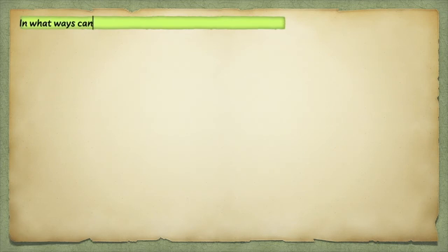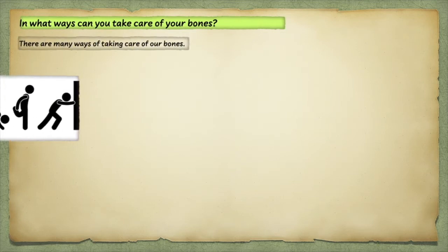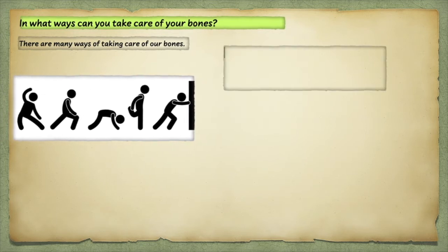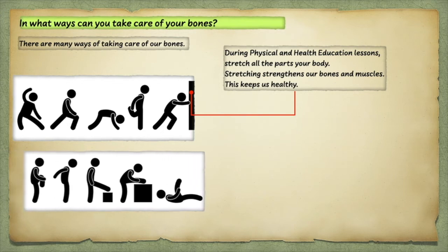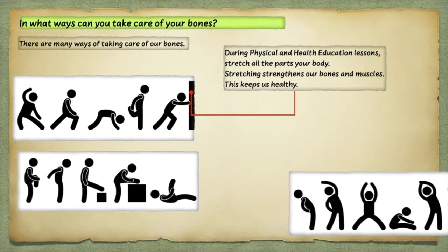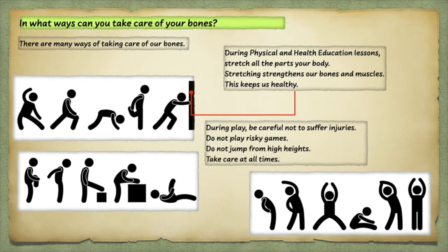In what ways can you take care of your bones? There are many ways of taking care of our bones. During physical and health education lessons, stretch all the parts of your body. Stretching strengthens our bones and muscles and keeps us healthy. During play, be careful not to suffer injuries. Do not play risky games. Do not jump from high heights. Take care at all times.